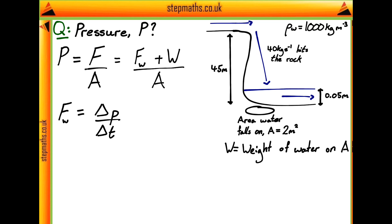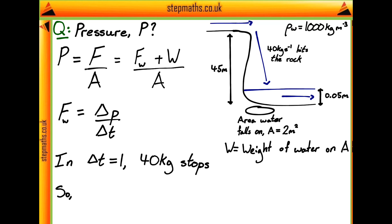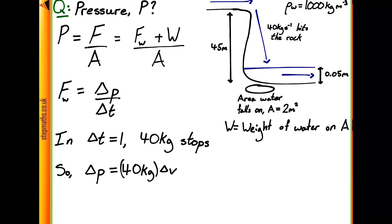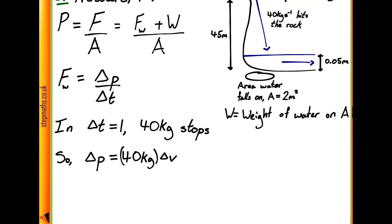Let's pick a nice easy time of one second, because in one second we're told that 40 kilograms of water hits the rock. So what we want to do next is think about the change of momentum of the water in this time. Using our equation for momentum, it's just going to be equal to the mass of this water in one second — 40 kilograms — multiplied by the change in velocity. The change in velocity is all going to come from the speed of the water as it falls over the waterfall, since initially the water is just travelling along the top of the cliff and not moving downward at all. So let's work out delta V, the velocity of the water at the bottom of the waterfall.